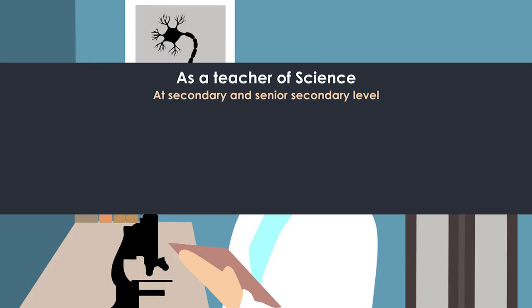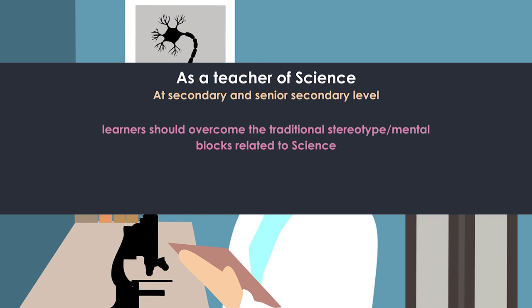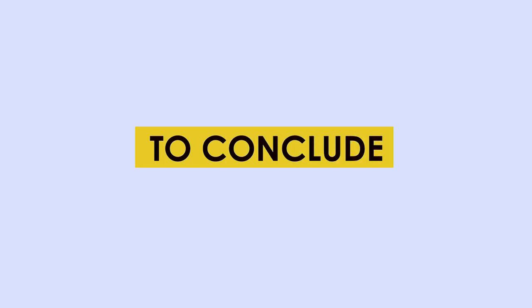Even if these elements are not part of the external examination system, as a teacher of science at secondary and senior secondary level, it must be ensured that learners overcome traditional stereotypes or mental blocks related to science — like the idea that science textbooks are heavy, that scientists are persons wearing laboratory coats working on microscopes, or that a natural scientist works in a rain forest or is busy writing equations on a chalkboard. All such images reflect only one aspect of science and do not offer a complete picture of science as a discipline. In conclusion, we have discussed the science curriculum at secondary and senior secondary stage, along with the objectives of teaching science, so that the curriculum may be designed and aligned with these objectives.